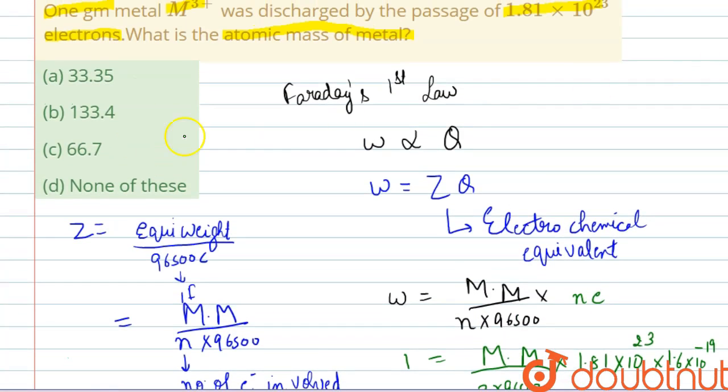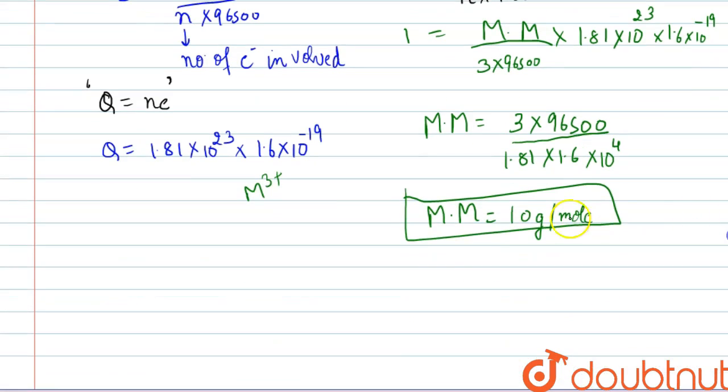Now we will see the options we are given 33.35. This is incorrect. This is also incorrect, and we are not given with the correct value. So the correct answer will be none of these. And the solution will be atomic mass will be 10 gram per mole. Thank you so much.